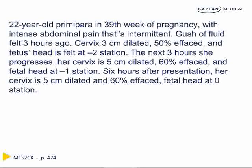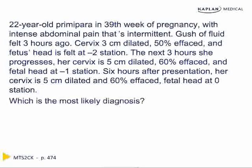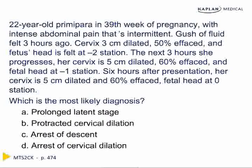We'll start with a case presentation. A 22-year-old comes in at 39 weeks gestation with spontaneous rupture of membranes. Her cervical exam is 3 cm, and over 3 hours she progresses to 5 cm. Over the next 6 hours she remains at 5 cm. The correct answer is arrest of cervical dilation, which is no dilation of the cervix for more than 2 hours in patients who are in the active stage of labor or who have a cervix greater than 4 cm.